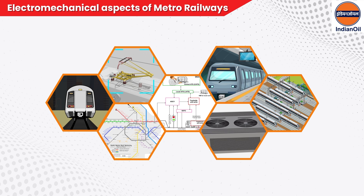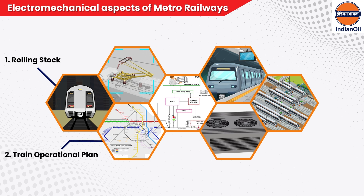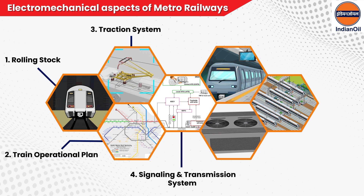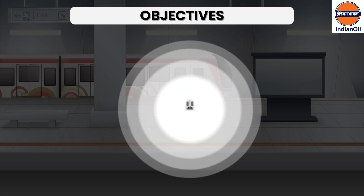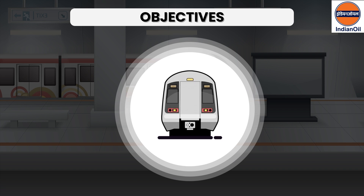Number one: rolling stock; two: train operational plan; three: traction system; four: signaling and transmission system; five: substations and power supply; six: ventilation and air conditioning (HVAC); and number seven: maintenance depot. Welcome to the module on lubrication in metro railways.